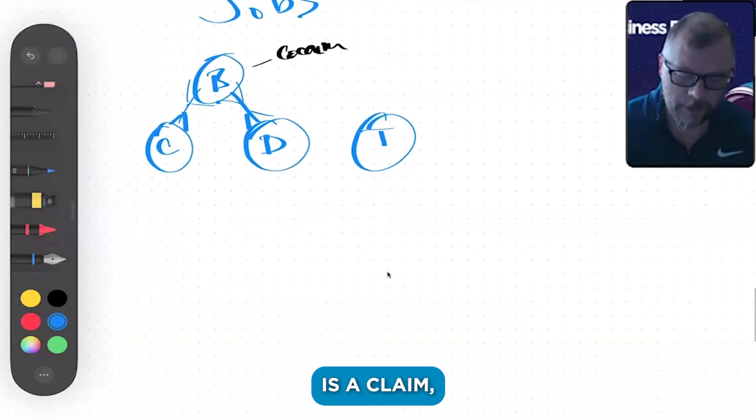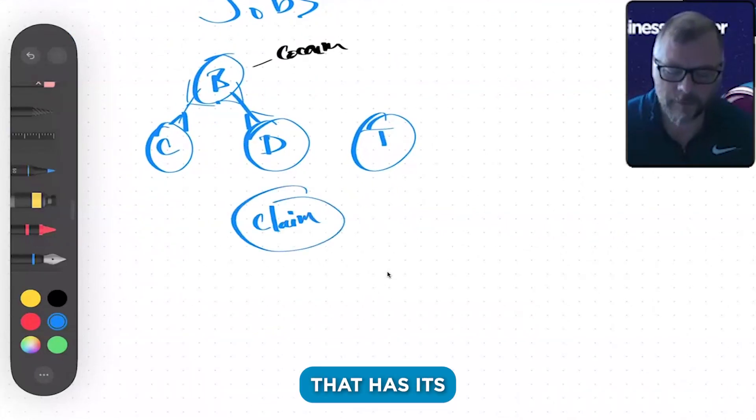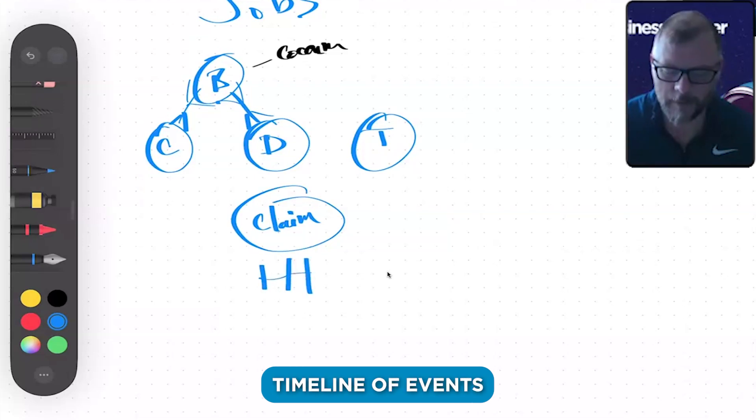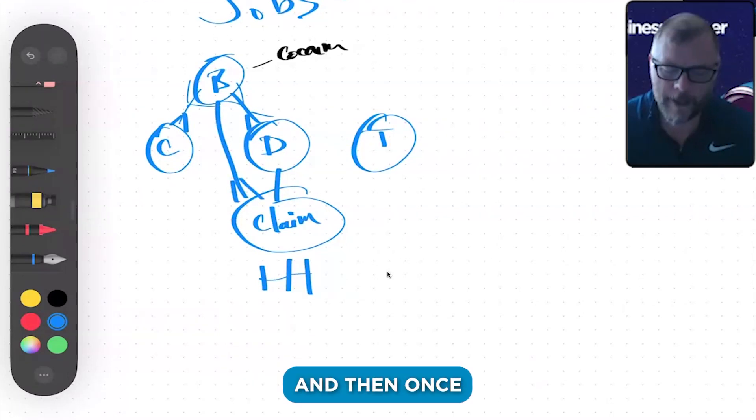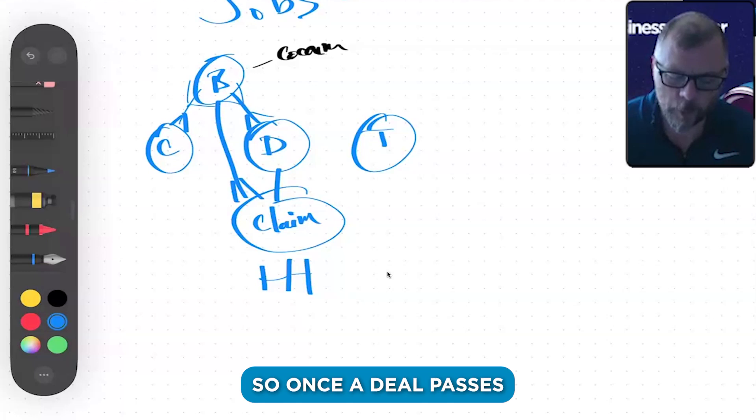Another thing that could exist is a claim, which is another object that has its own continuum. It has its own timeline of events that is separate from a deal. Same thing: a building could have one claim on it or it could have multiple claims on it.